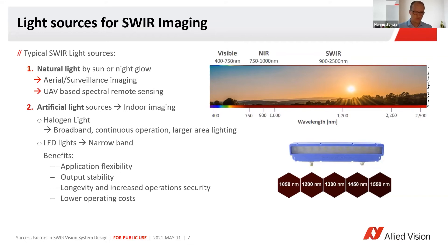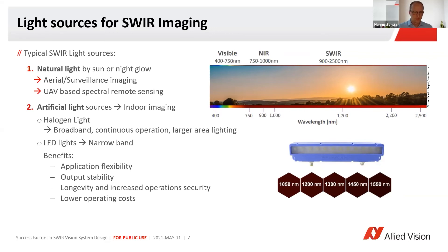A standard choice could be a broadband halogen light, continuously operating. The disadvantage of that would be heat. If you want to have something operating at a lower temperature and optimized for certain wavelength characteristics, one thing we've seen emerging over recent years is narrowband LED lights optimized for very specific wavelengths, to give a sharper contrast and make use of the certain optical footprint of the material or object.